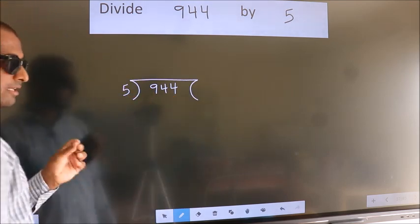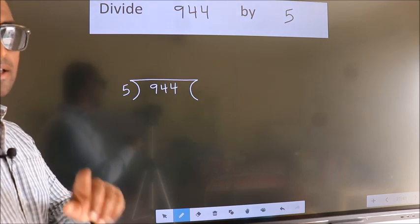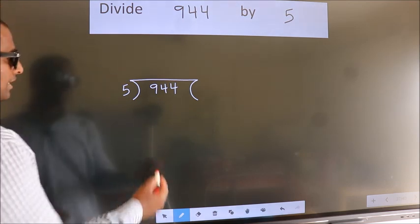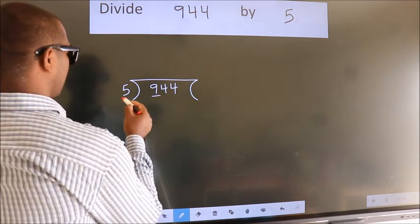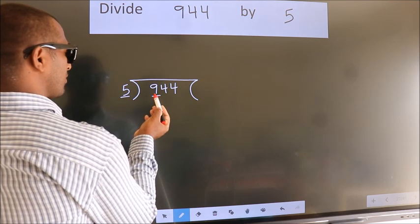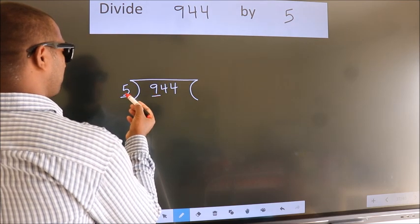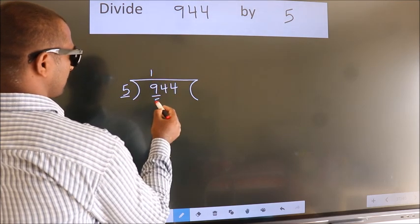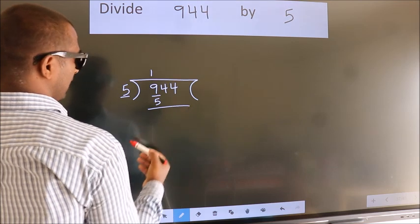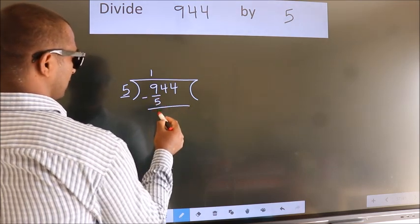This is your step 1. Next, here we have 9, here 5. A number close to 9 in 5 table is 5 times 1 is 5. Now we should subtract. We get 4.